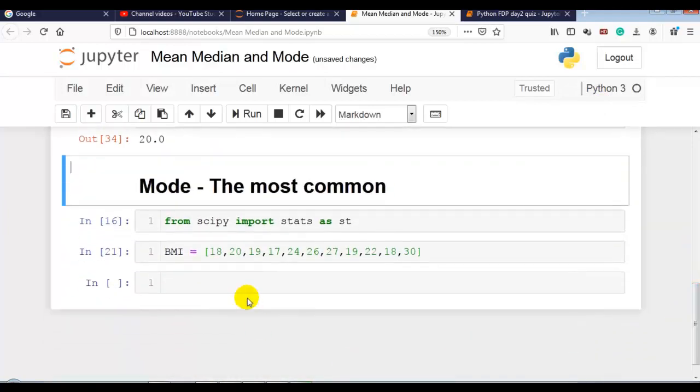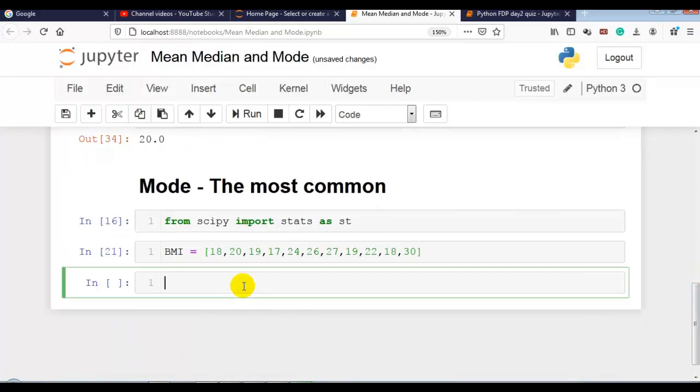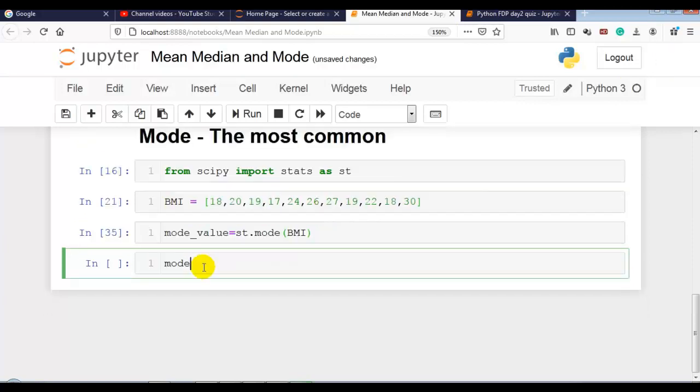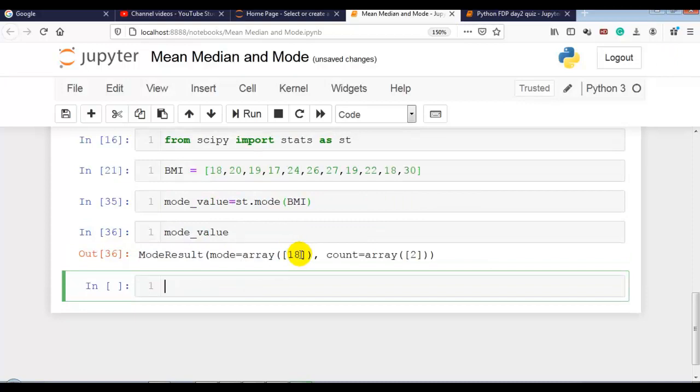Now mode, the most common value, value appear most number of times. So for that we require to import scipy. So from scipy import stats as st. Now mode value is equal to st.mode and bmi. Mode underscore value. So here is the 18 which appears two times in this sequence.